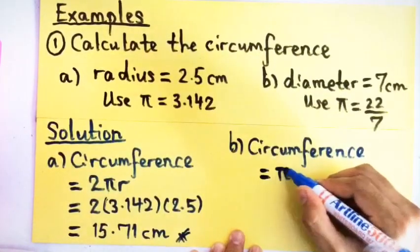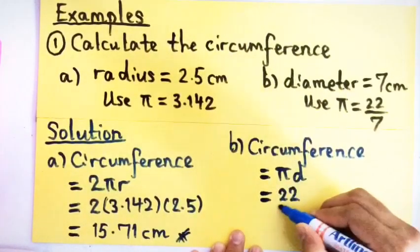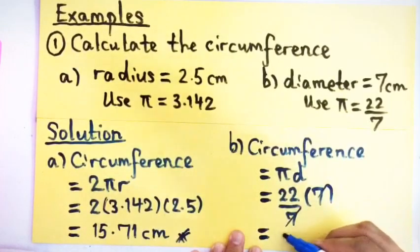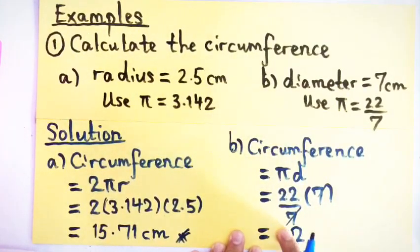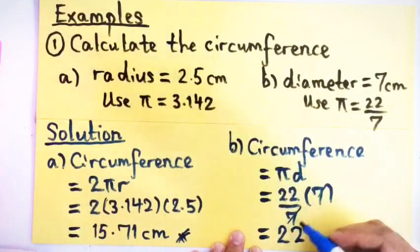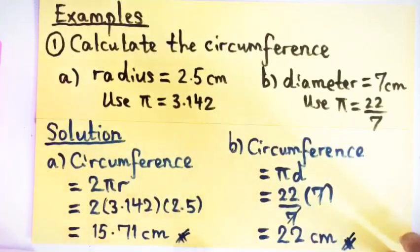Now if you solve the second example, you have diameter, so you can use the other formula which is πD. π will be 22 over 7, so you cancel the 7 there. The answer will be 22 cm.